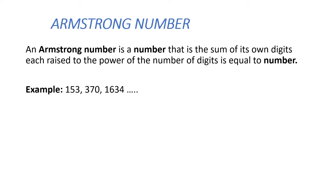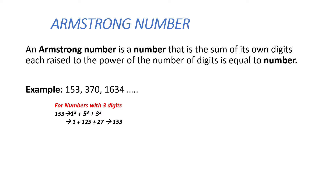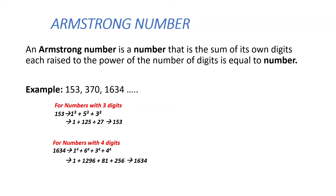Let us see some examples: 153, 370, 1634, and so on. The digits of 153 are 1, 5, and 3. As it is a three-digit number, every digit is raised to the power of 3, so we compute 1 cubed plus 5 cubed plus 3 cubed, and by adding these we get the same number 153.